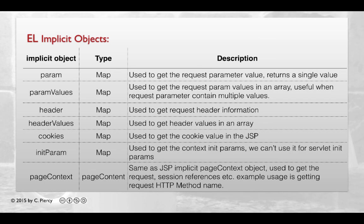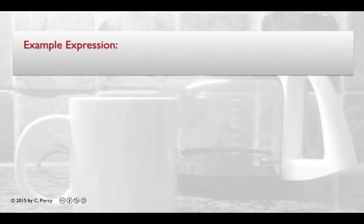Let's see a few examples of some of these implicit objects in action. Here's an example where we have a request parameter that holds the loan rate.